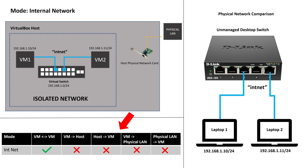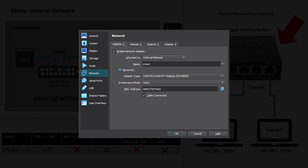Looking at the table, only VMs connected to the internal network will be able to communicate with each other — this is a totally isolated network. In terms of a physical network, it's basically the same as if you had a physical desktop switch and plugged each of your physical devices into it. Each device will be able to communicate with one another, but because there's no router, you won't be able to access external networks or the internet. This mode is useful when you need to model or simulate real network operations, like using it to connect VMs to the LAN interface on the OPNsense firewall.